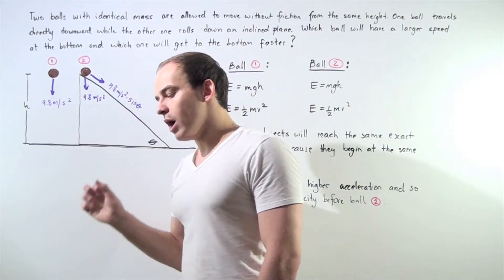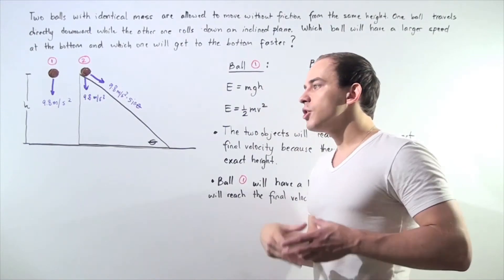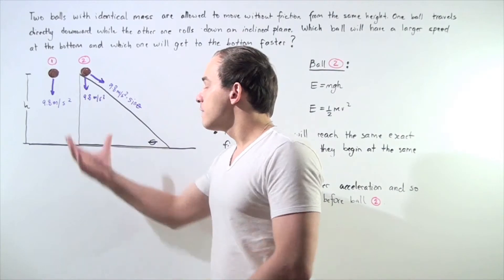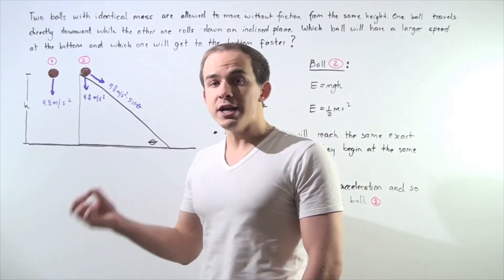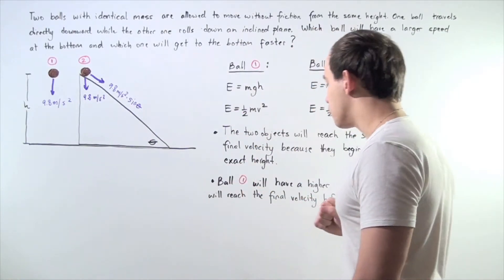So, object one, ball one has a higher acceleration. So that means the rate of change of velocity will be higher for object number one than object number two. And so, it will reach the final velocity faster than object number two. So, ball one will have a higher acceleration than ball number two.